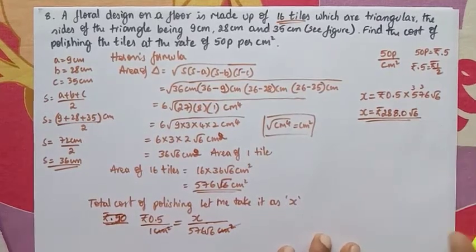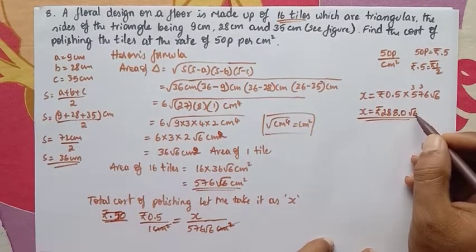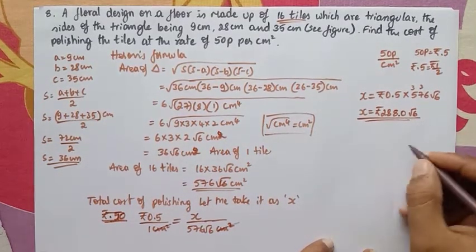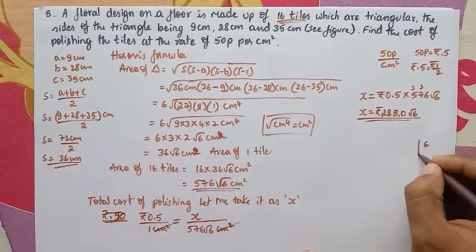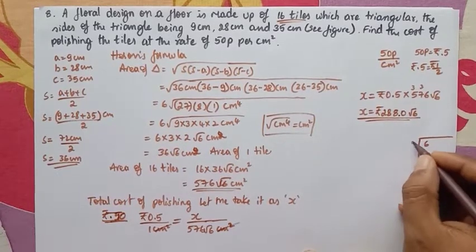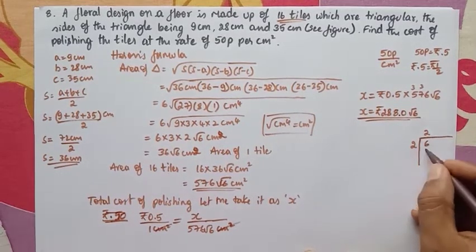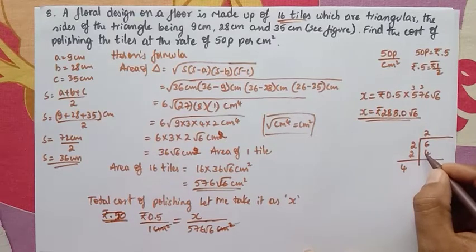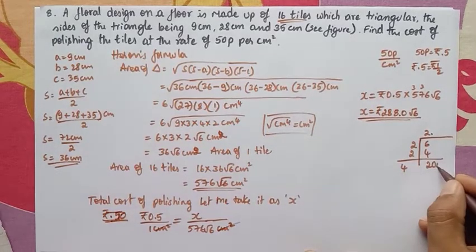In the textbook you may not find this value directly. Since we need the value of √6, let me show how to find it using the long division method. We know 2² = 4 and 3² = 9, so √6 lies between 2 and 3. We start with 2, and after placing the decimal point we bring down two zeros to get 200.